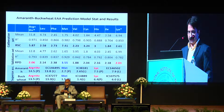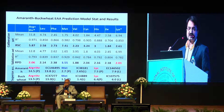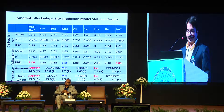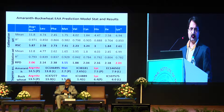I would like to highlight the methionine case, where the R² value is high, the predicted value is 2.7, and the laboratory value is 2.65 in amaranth.